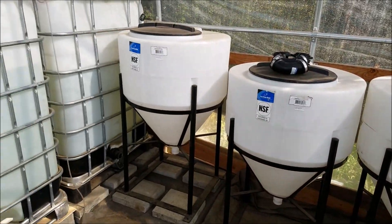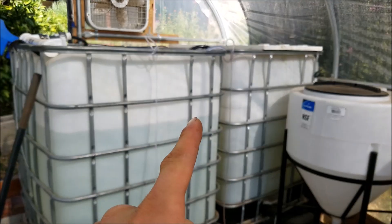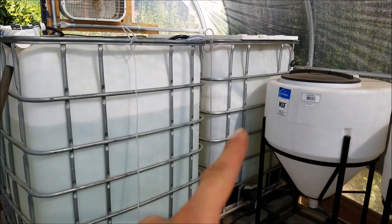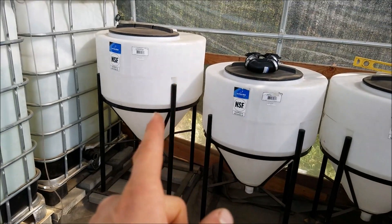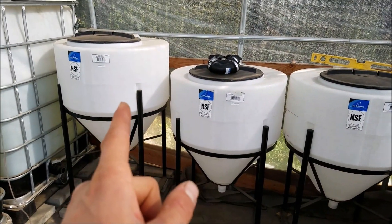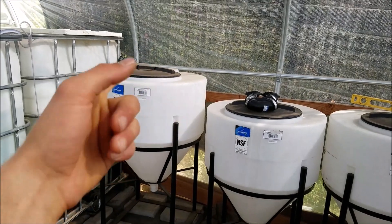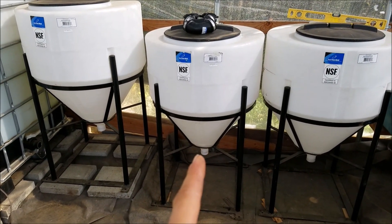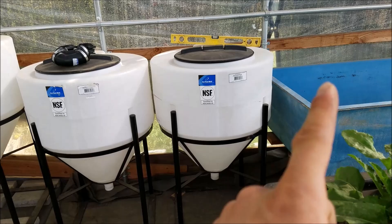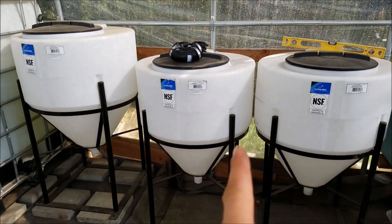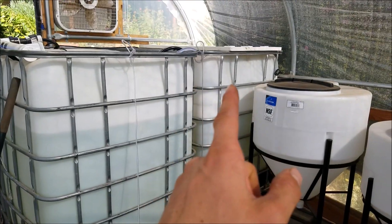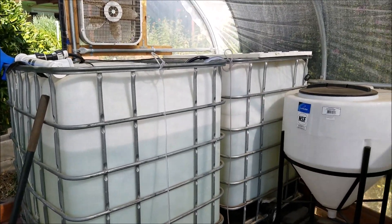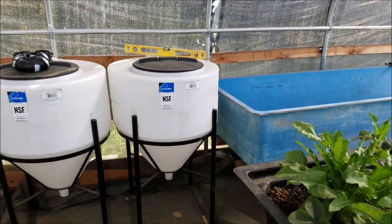Now I'm going to work on this side of the aquaponics system. I'm first going to connect these two IBC totes and then start connecting these. Some of these I don't have to drill - I do have to drill a little hole at the top, a one or two inch hole. This one I don't have to drill at all, and then this one I just got to drill on that side. So it's nice, I only have two holes that I have to drill in these two.